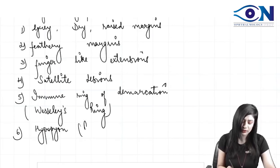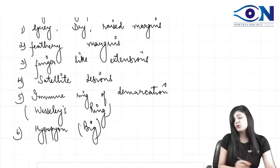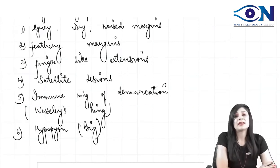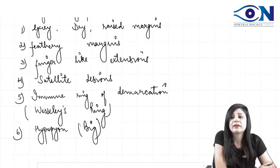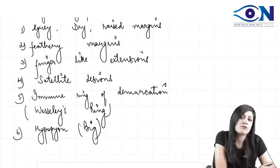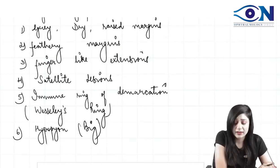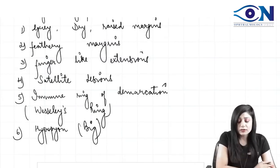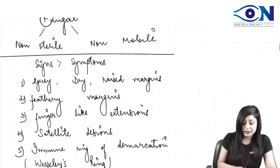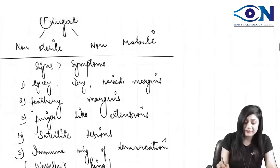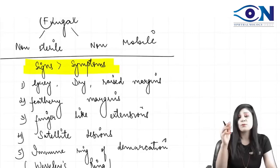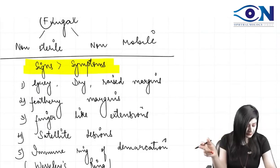Along with these features, there is typically a large hypopyon. There is no vascularization, and that is why the risk of perforation is also rare. Signs are more than the symptoms in fungal corneal ulcer.